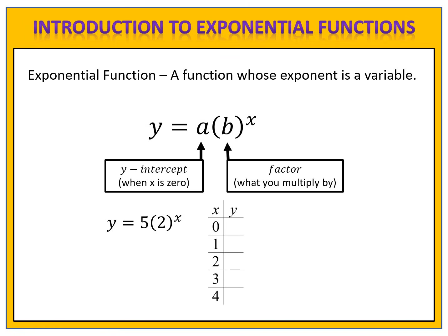We can do that very easily. We first look for the y-intercept. The y-intercept is the a value, or 5. So when x is zero, y is 5. We now use the b value, or the factor, in order to create the additional outputs. The multiplier, or factor, is 2. Notice the pattern in the table: 5 times 2 is 10, 10 times 2 is 20, 20 times 2 is 40, 40 times 2 is 80. And now we've created the input and output table for the function y equals 5 times 2 to the x.